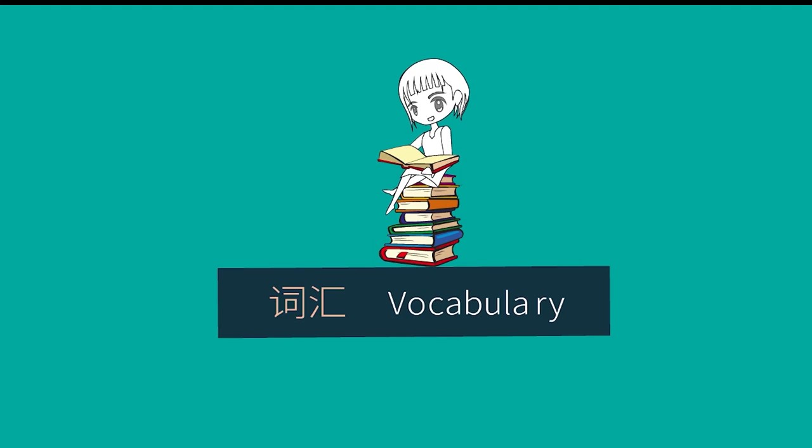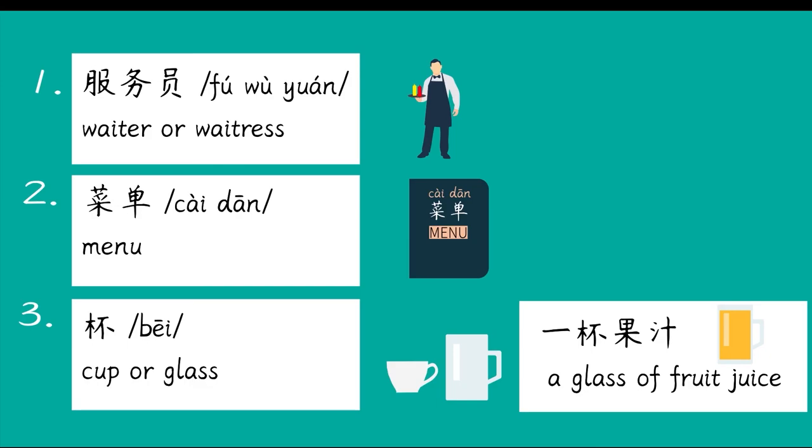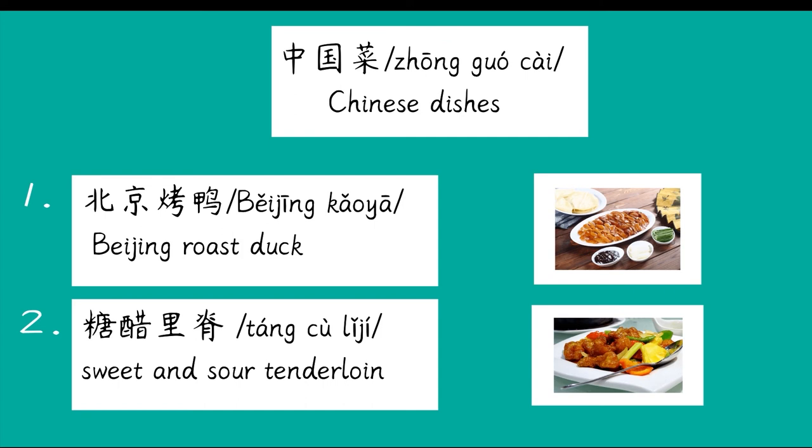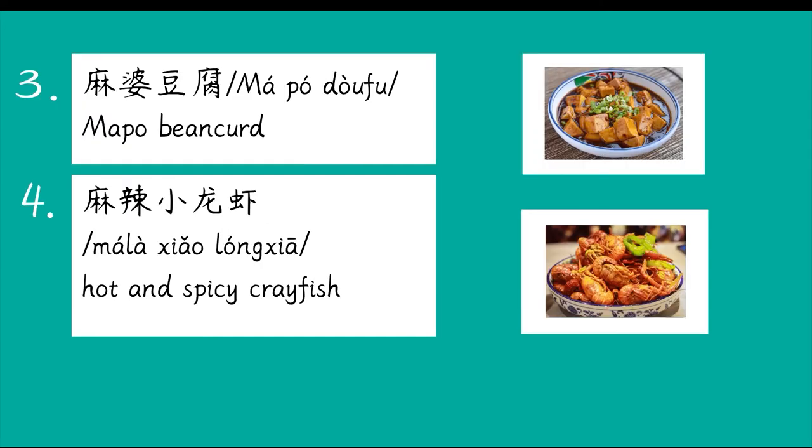词汇: 服务员, 菜单, 杯, 一杯果汁, 壶, 一壶茶, 啤酒, 辣, 北京烤鸭, 糖醋里脊, 麻婆豆腐, 麻辣小龙虾。